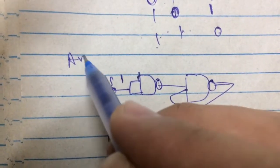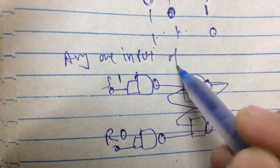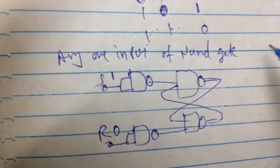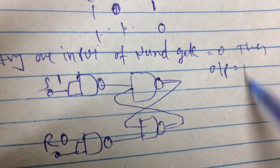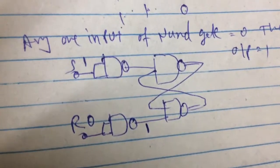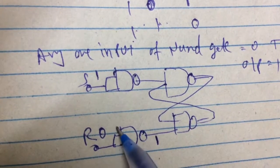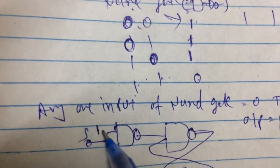We all know that any one input of NAND gate is equal to 0, then output equals 1. So here 0, then here output equals 1. Because here 0 connected to both inputs, 0 and 0 gives result 1.